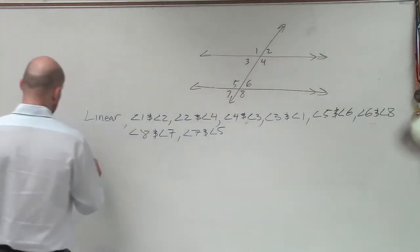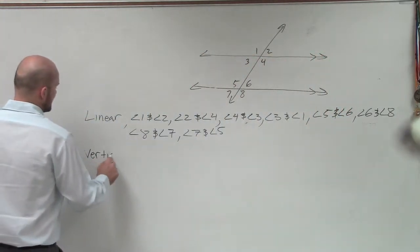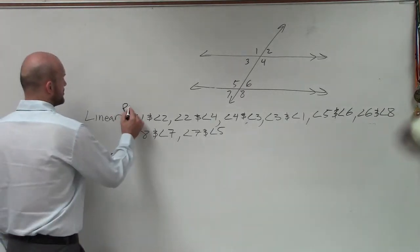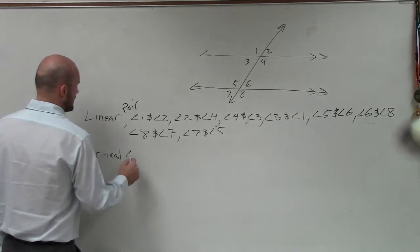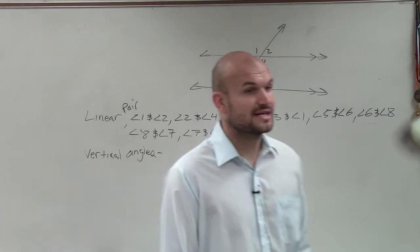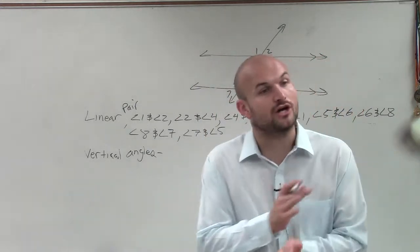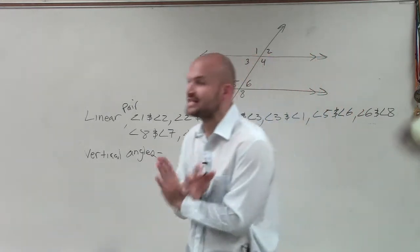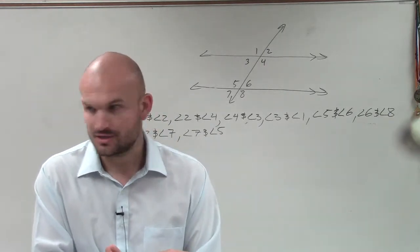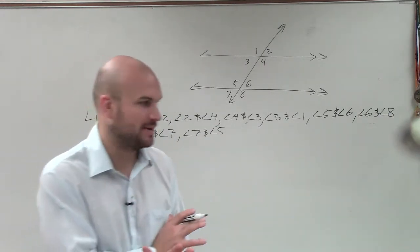The next one is vertical angles. Again, vertical angles, guys, are angles. That's a linear pair. Vertical angles. So vertical angles, ladies and gentlemen, are angles, remember, that are directly across from each other on the intersection of two lines. They do not prove parallel lines, just like a linear pair doesn't prove parallel lines.